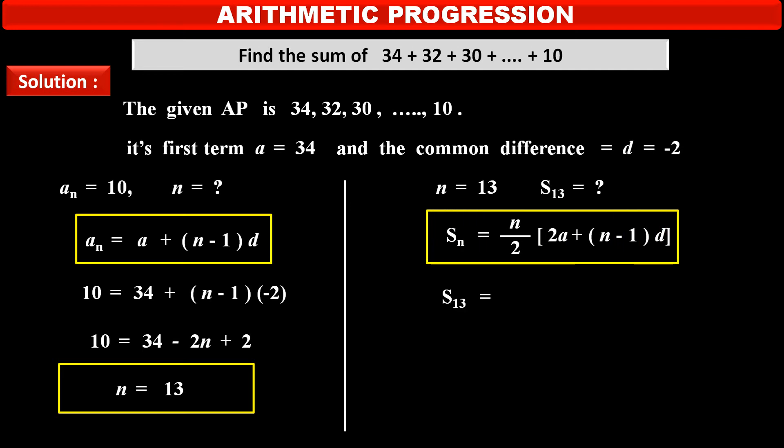S_13 is equal to n upon 2 that is 13 upon 2 into in bracket 2 into first term 34 plus value of n 13 minus 1 into common difference minus 2. S_13 is equal to 13 upon 2 into in bracket 2 into 34 that is 68 minus 24. Therefore, solving the above, we get S_13 is equal to 286.